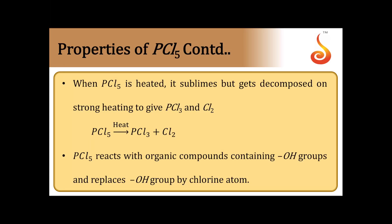PCl5 is actually a sublimating solid, but when heated to high temperatures it decomposes and gives rise to PCl3 and Cl2. So it sublimes but when heated to higher temperatures it starts dissociating and forms PCl3 and Cl2.